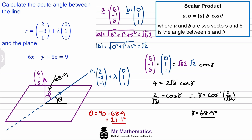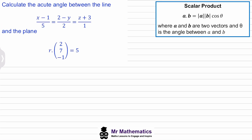Let's try another question. In this example, we've been asked to work out the acute angle between the line given in its Cartesian form and the plane given in its scalar product form. We need to be careful with the y term because this is 2 minus y. But if we multiply it all by negative 1, this becomes y minus 2 over negative 2, and now we have the equation in Cartesian form. Perhaps you want to try this question yourself — you can pause the video and when you come back we'll go through the worked solution.